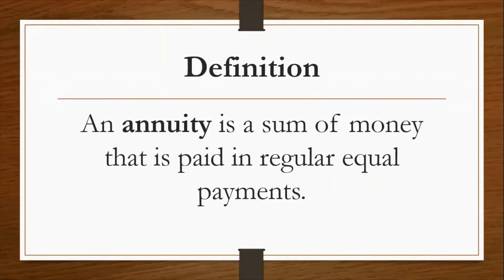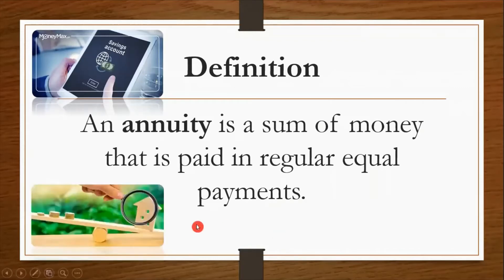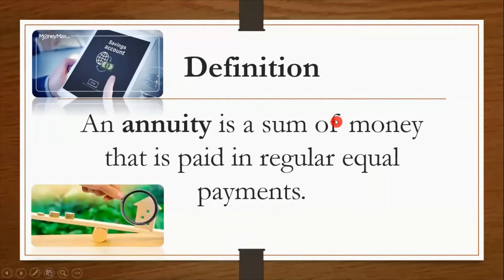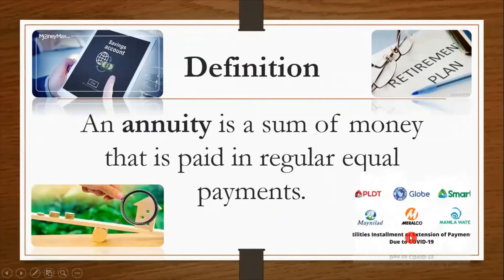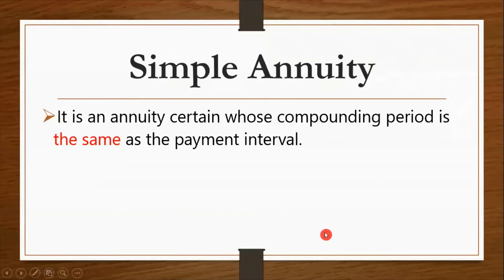An annuity is the sum of money that is paid in regular payments. Examples are regular deposits to a savings account, monthly payments of house rent, monthly retirement benefits from a pension plan, and installment payments. One kind of annuity is known as simple annuity, and it is an annuity whose compounding period is the same as the payment interval.